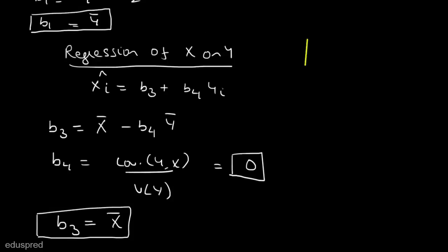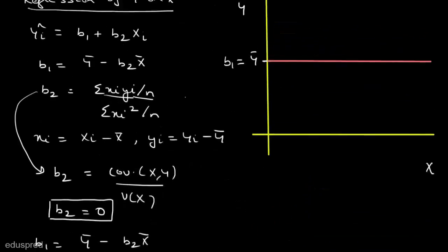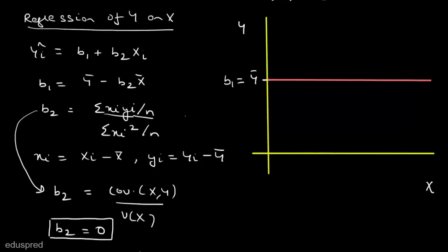Now let's graph the regression of x on y. Since x is the dependent variable, x is on the axis and y is the independent variable. The intercept b3 = x̄ and the slope b4 = 0, so this regression line is a vertical line at x̄. When we draw both lines together on one graph, we can see they intersect at right angles and both pass through (x̄, ȳ).